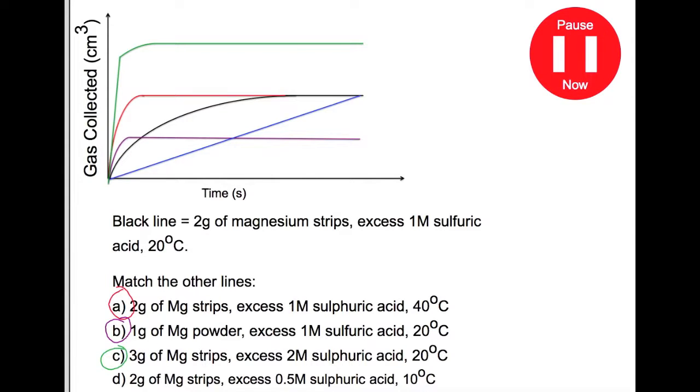And that leaves us with the last line. So 2 grams of magnesium strips as we had in the first one, excess 0.5M acid and it's at 10 degrees so it's going to be significantly slower so that will be the blue line.